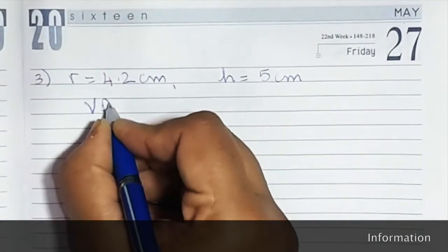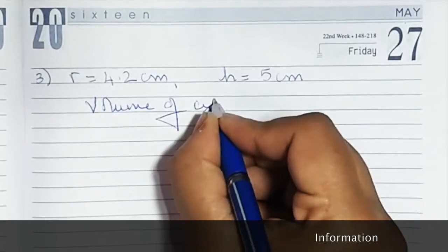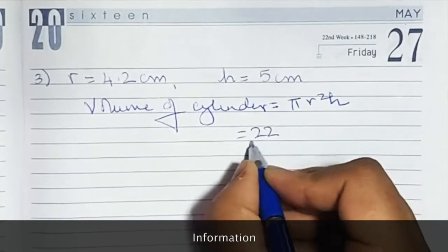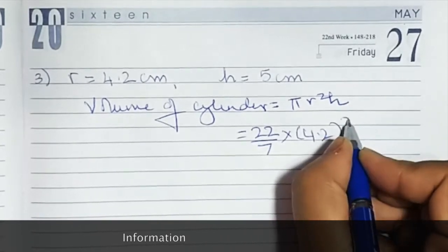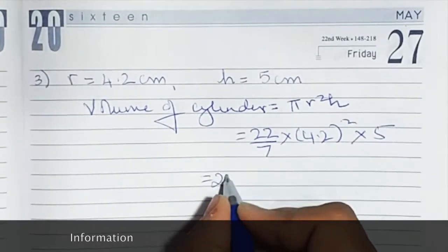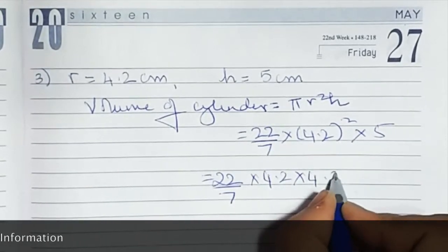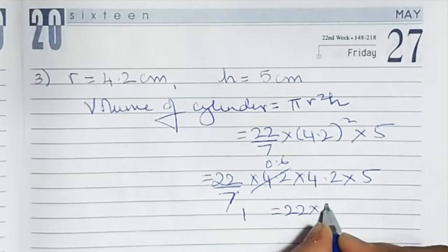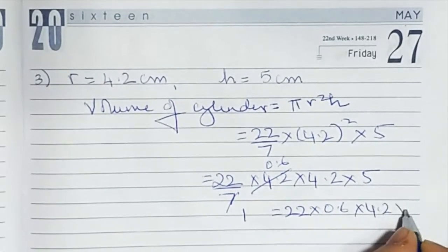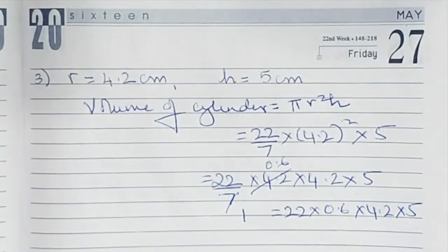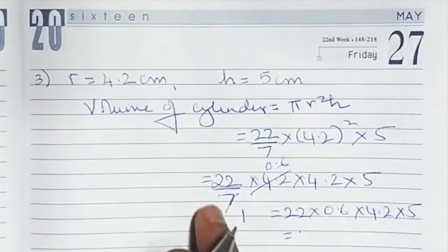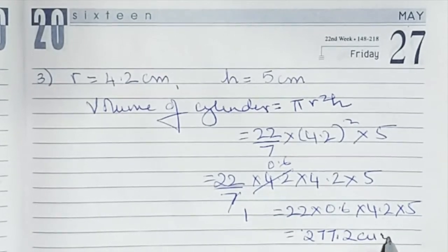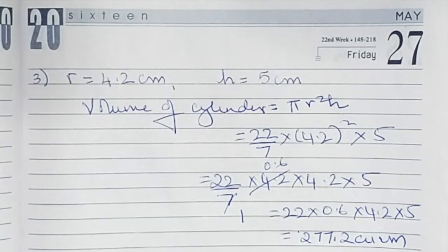Let us do sum number 3. Again, volume of cylinder equals pi r squared h, that is 22 upon 7 into 4.2 squared into 5. So, 22 upon 7 into 4.2 into 4.2 into 5. Simplifying, 7 into 0.6, we get 22 into 0.6 into 4.2 into 5. You can do the multiplication part on your own. The final answer we get is 277.2 cubic centimeters.